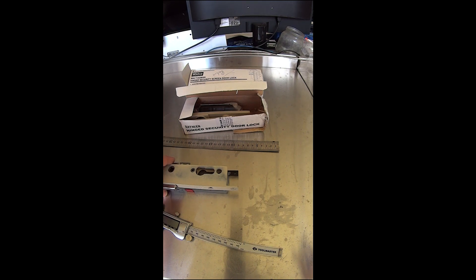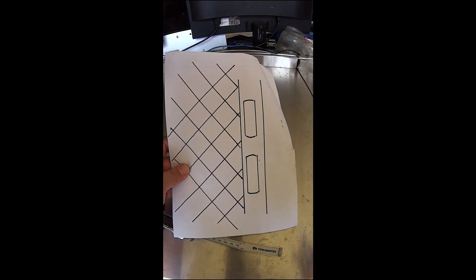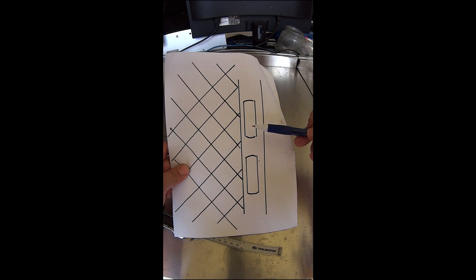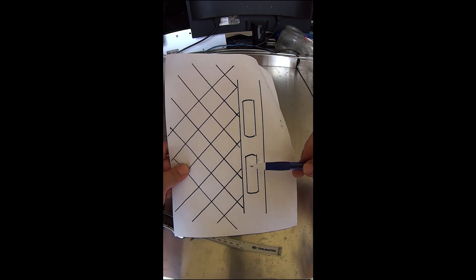To start with I'll show you my diagram here. Normally you would have your screen door lock like this. When you remove everything from the screen door you'll be left with two holes here.